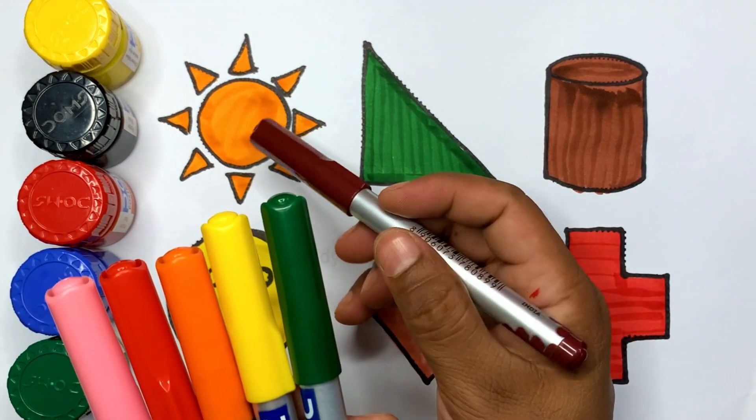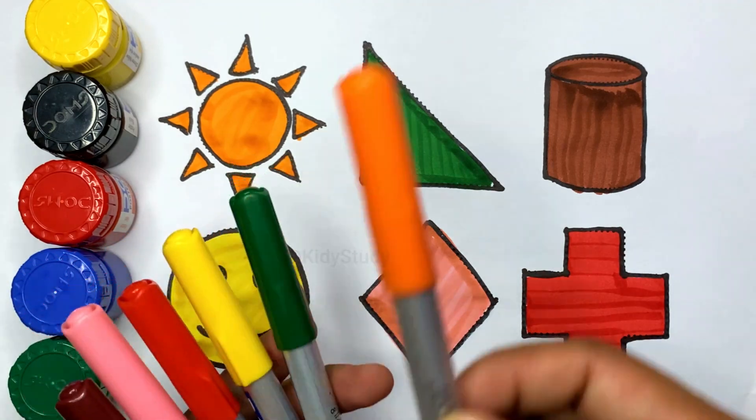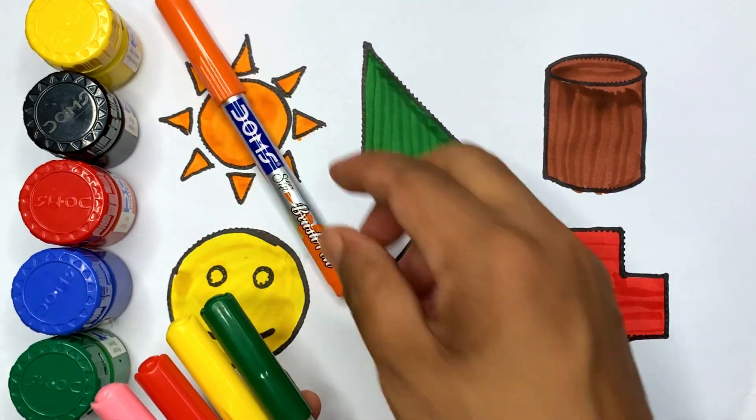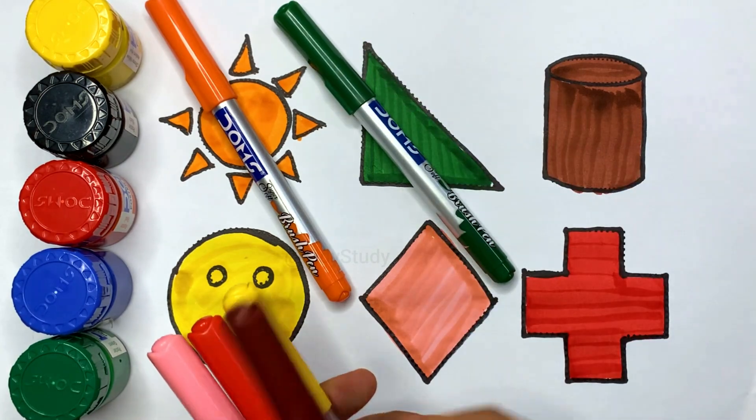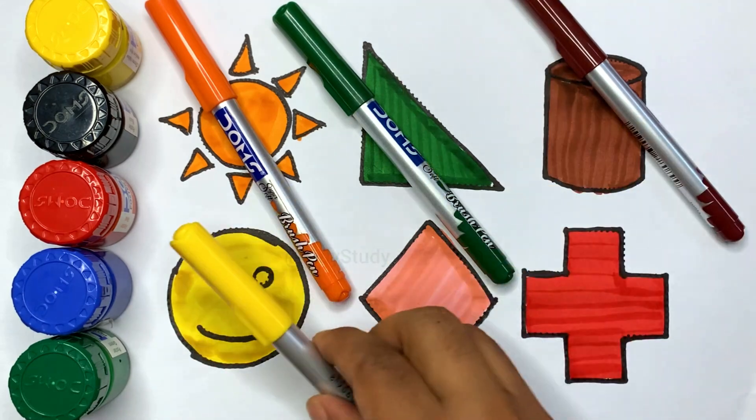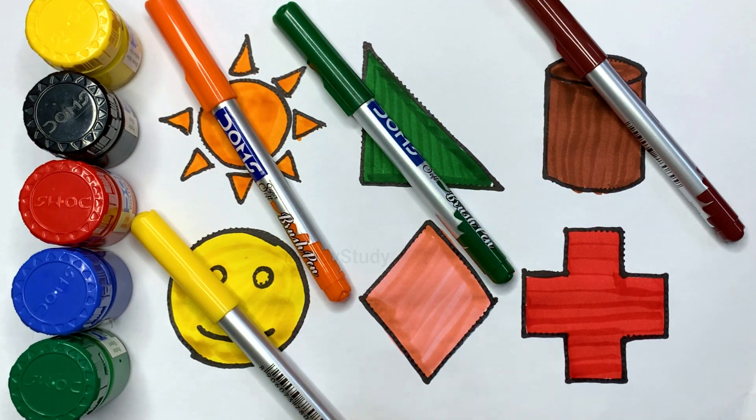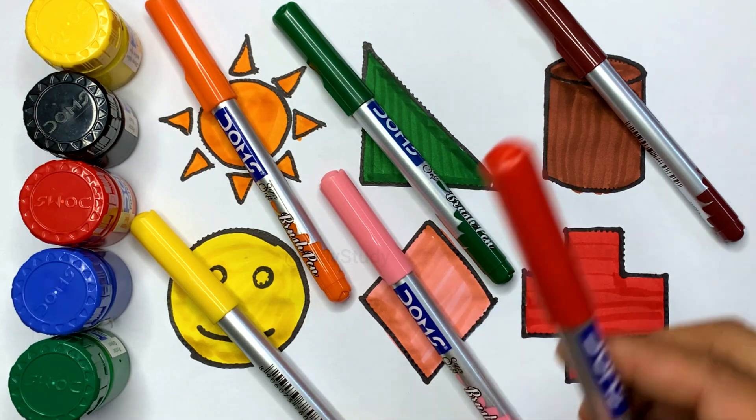Kids, here are the color names and 2D shapes names: orange color - sun, green color - right angle triangle, brown color - cylinder, yellow color - smiley face, light pink color - diamond, red color - cross.